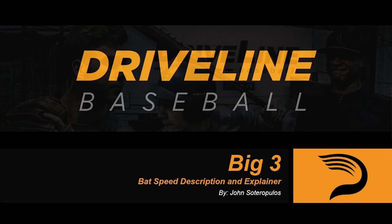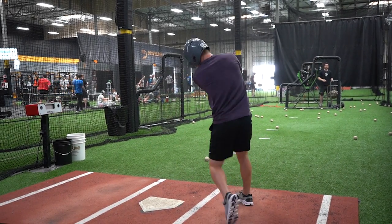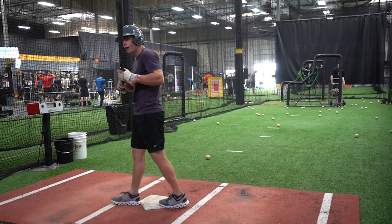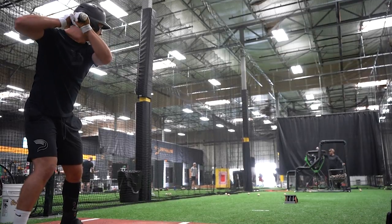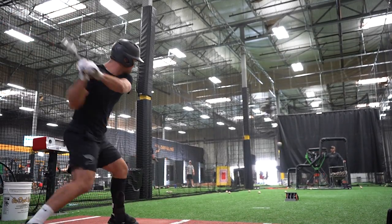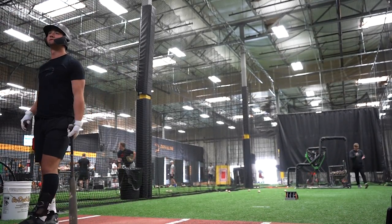No surprise here really. The first thing we're going to look at is how bat speed is measured. The formal definition reads: bat speed is the speed of the bat in miles per hour measured 6 inches from its end. Essentially, we are measuring how fast the sweet spot is moving when contact occurs. One technical note: when we mention bat speed, we are specifically talking about how fast the bat is moving at contact.